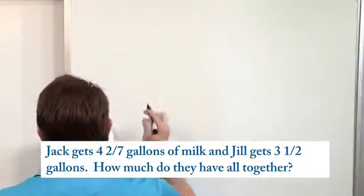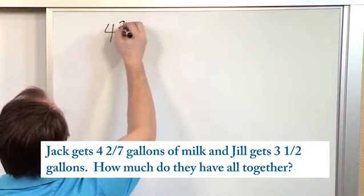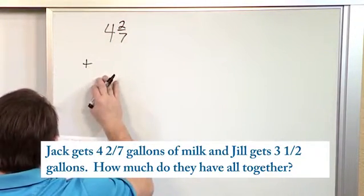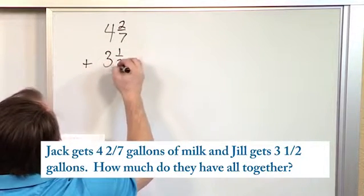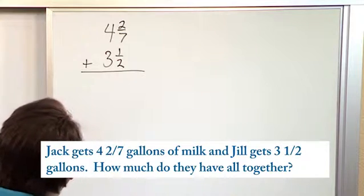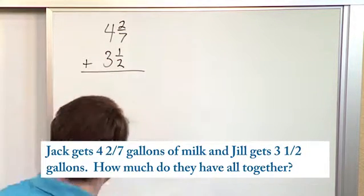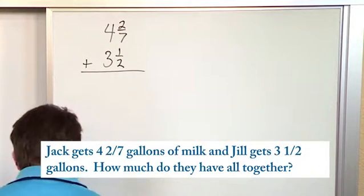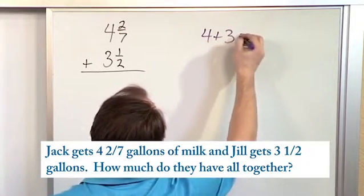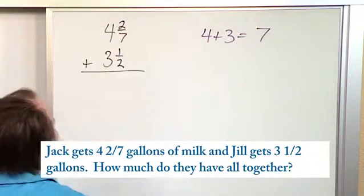So what we'll do is we'll say we have four and two-sevenths. That's what Jack has. And we're adding to that what Jill has, which is three and one-half. So we want to add these together. So as we said before, there are a couple ways to do it. We're going to add the whole numbers together first. So let's do that. Four plus three, that's the whole numbers, so seven. So we know we have at least seven gallons.